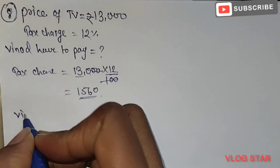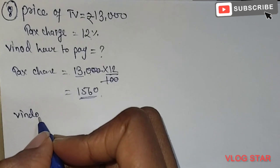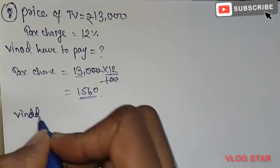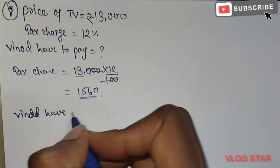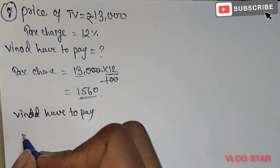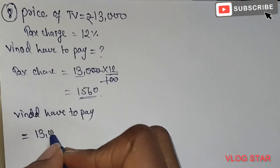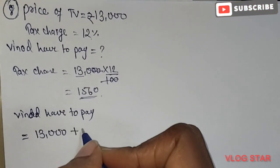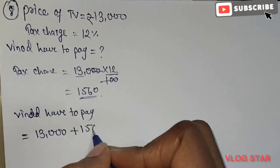Now we know Vinod has to pay how many rupees. So first TV price, that is 13,000, plus tax, 1,560 rupees.